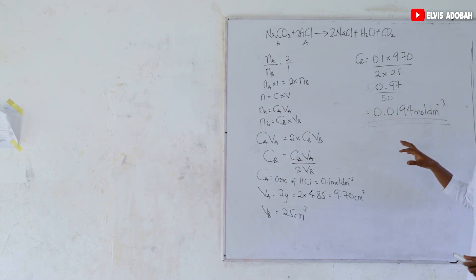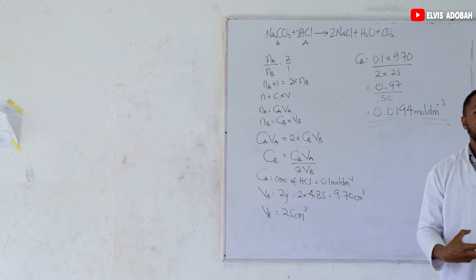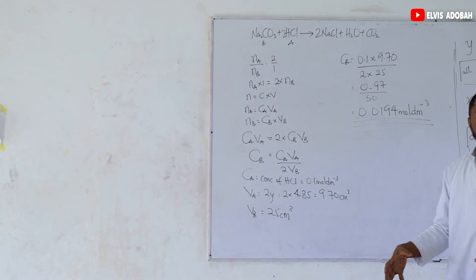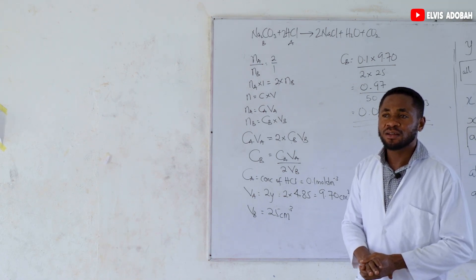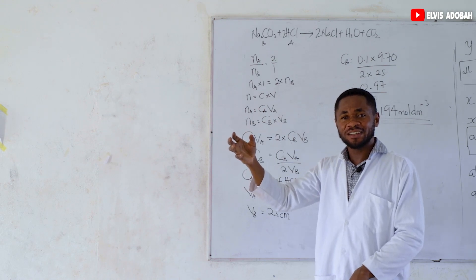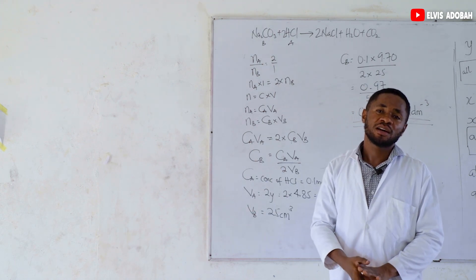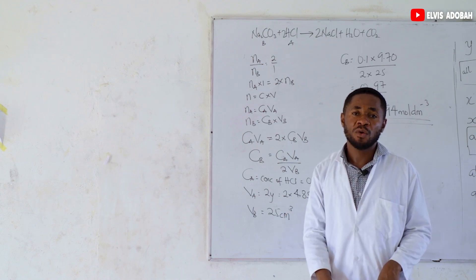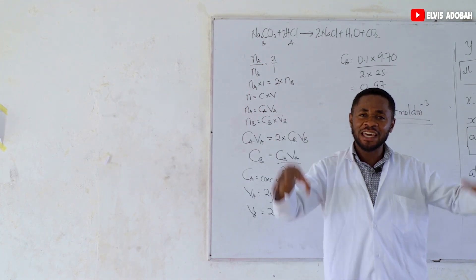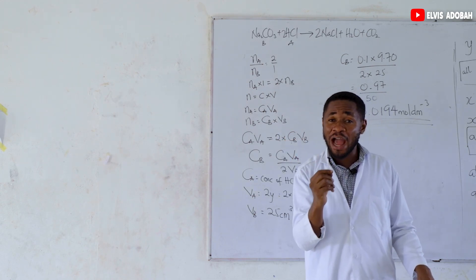And that is how we use this discontinuous double indicator titration to calculate the concentrations of substances in the mixture. In this example we used a sodium carbonate and sodium bicarbonate mixture. We didn't know the concentration of each, but we had 0.1 mol/dm³ HCl as our standard solution. We titrated with it and got two different endpoints — one with the phenolphthalein titration and the other with the methyl orange titration.